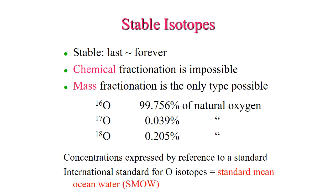Stable isotopes are not produced by radioactive decay and therefore they're going to last forever. Some common stable isotopes that are useful in igneous and metamorphic petrology are going to be oxygen, carbon, hydrogen, lead, and sulfur.